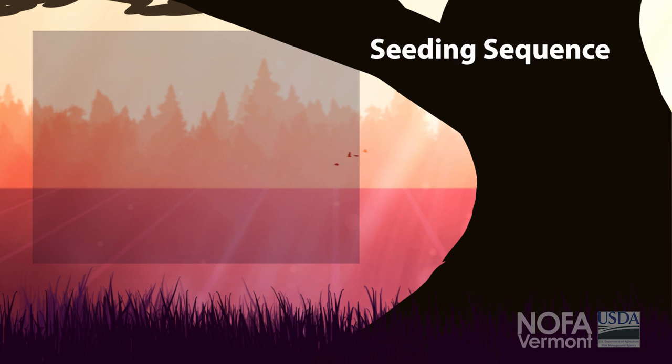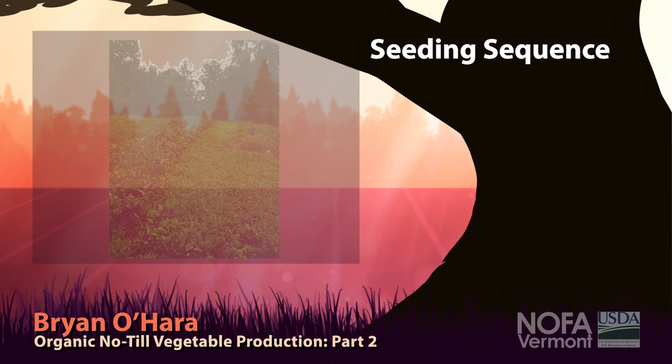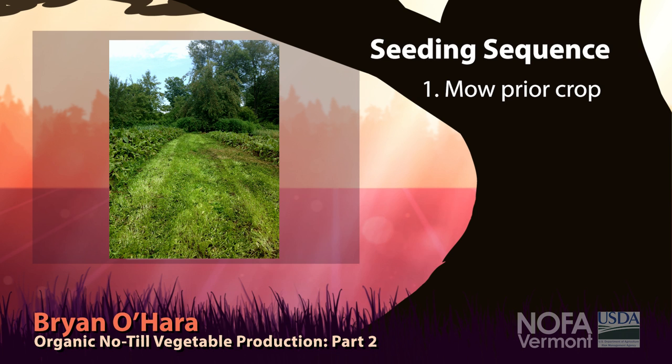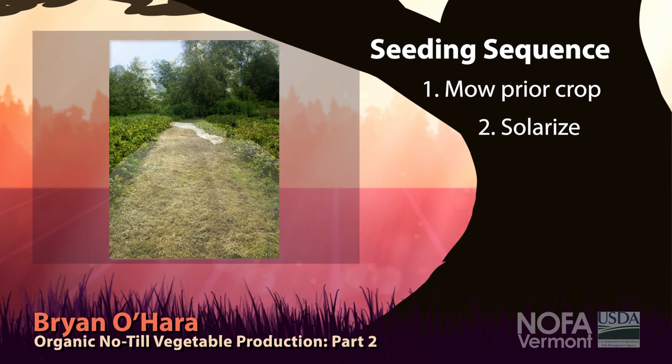I'm going to show just the seeding sequence of what actually happens in a little area here as an example. This is just an overgrown arugula patch — it was an arugula seed crop that went to flower with excessive growth. We're going to eliminate this. We mowed it down with the mowing machine — this is one morning, probably July — and there are beets next to it. We covered it that morning and this is what it looked like 24 hours later.